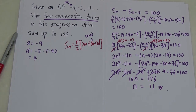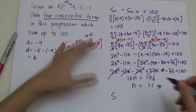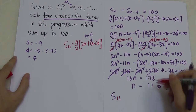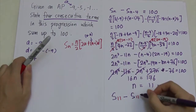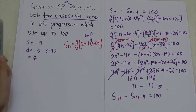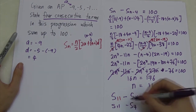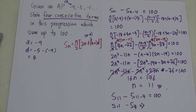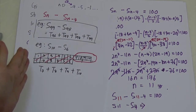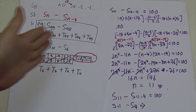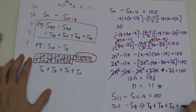Now I substitute N equals 11 back in. So S11 minus S(11 minus 4), which is S11 minus S7, equals 100. Which terms do you actually get? The sum of the first 11 terms minus the sum of the first 7 terms gives you T8 plus T9 plus T10 plus T11.